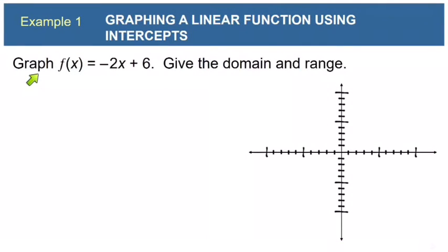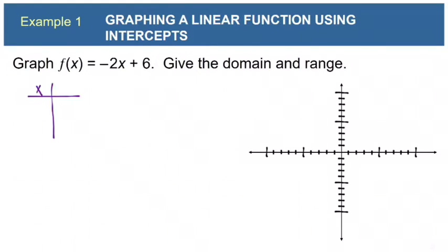Here's example 1: graph f(x) equals negative 2x plus 6 and give the domain and range. There are several ways to graph a linear function, but the only one we know right now is to plug in a couple of x values and make ordered pairs and plot those to form our line. Let's make an xy table. Plugging in 0 gives negative 2 times 0 plus 6, which equals 6. So one ordered pair is (0, 6).